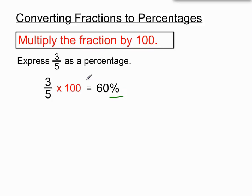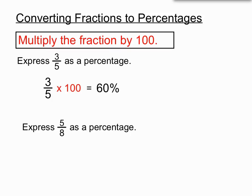So, 3 over 5 into your calculator times by 100 will give you 60, and we'll pop the percentage sign there because we know we're heading to convert these into percentages. Second example here: 5 eighths as a percentage — we'll just do what the rule says and take 5 eighths and multiply that fraction by 100.